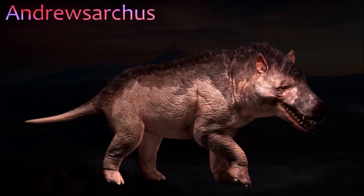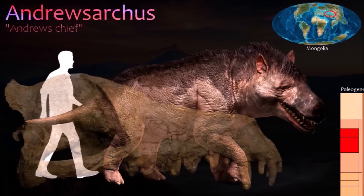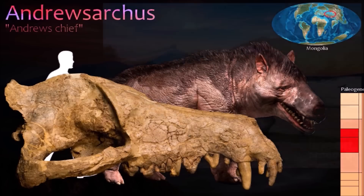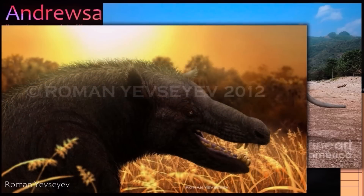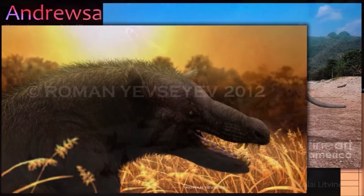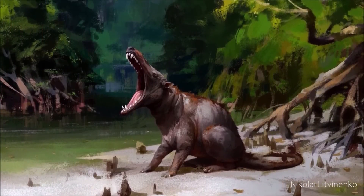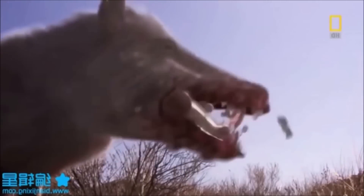Andrewsarchus was a giant predator that lived between about 40 and 37 million years ago. Most of what we know about this mammal comes from a single skull found in Mongolia. The skull is more than 1 meter long, and the animal's total body length is estimated at about 3.7 meters, with a weight of about 250 kilograms — making Andrewsarchus the largest predatory land mammal that has ever lived. Its pointed teeth are often worn and blunt, suggesting it not only hunted large prey but was also a scavenger, using its enormous jaws to crush the bones of animal carcasses.